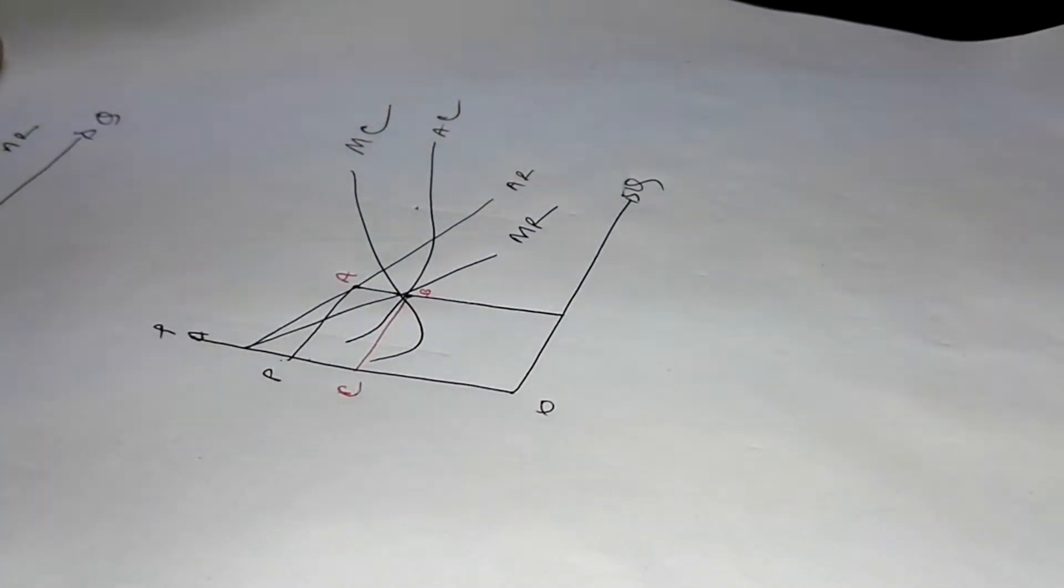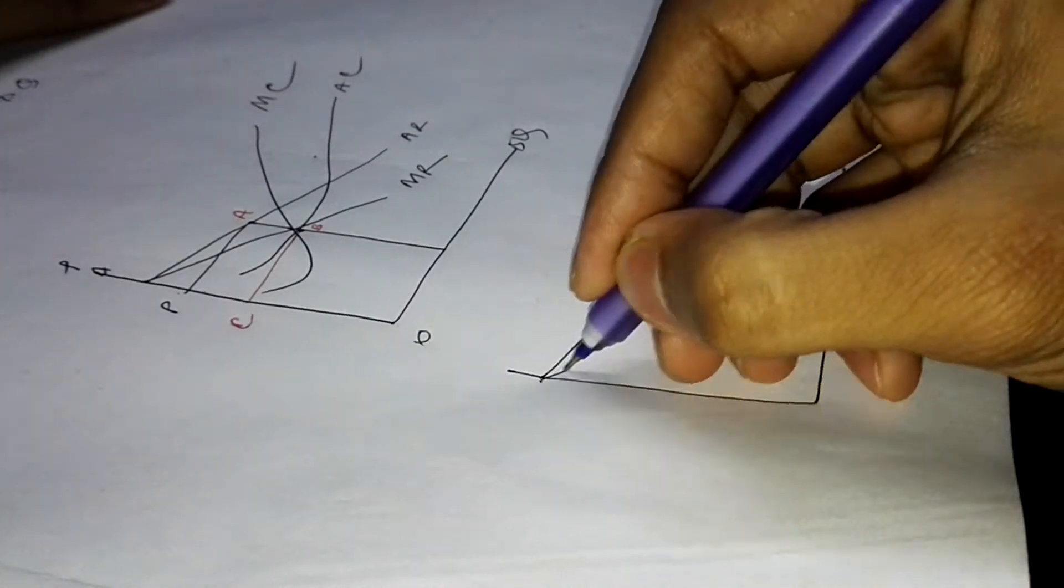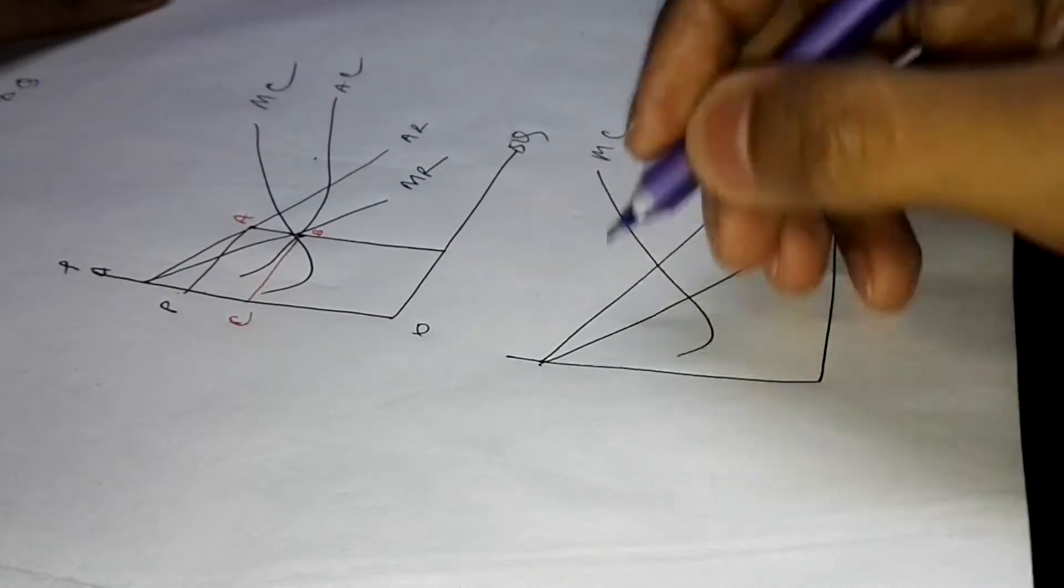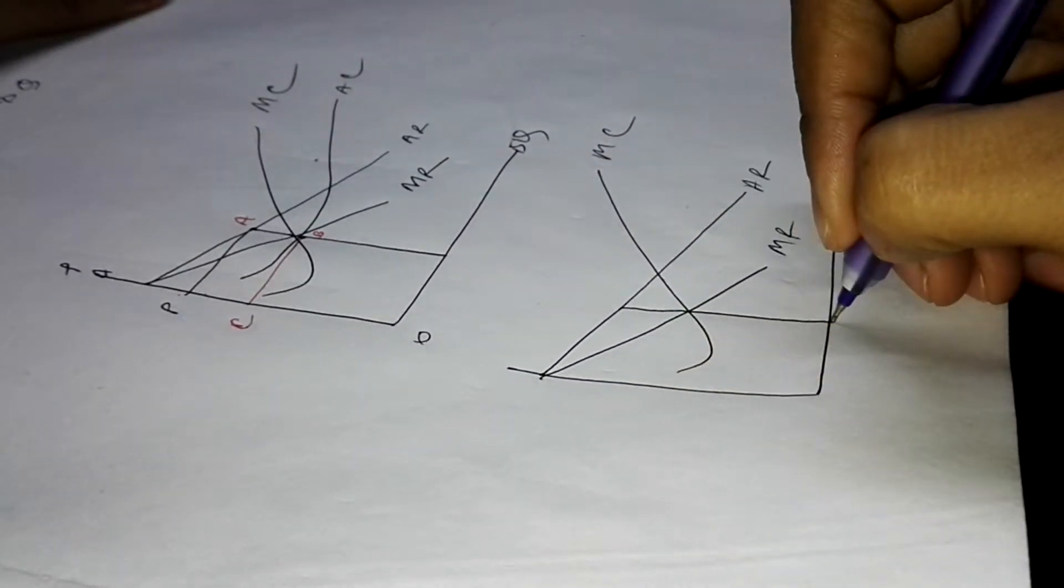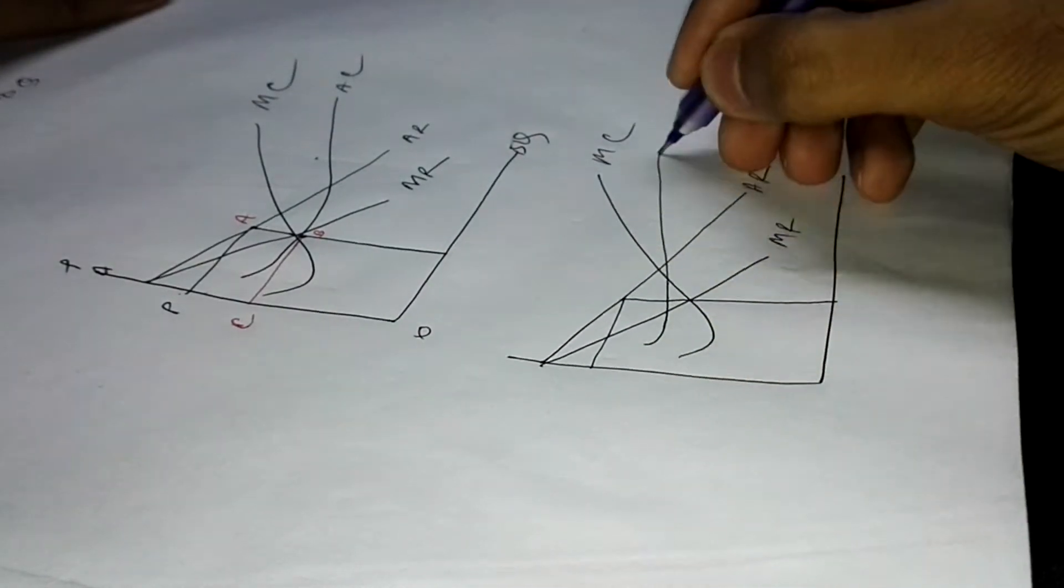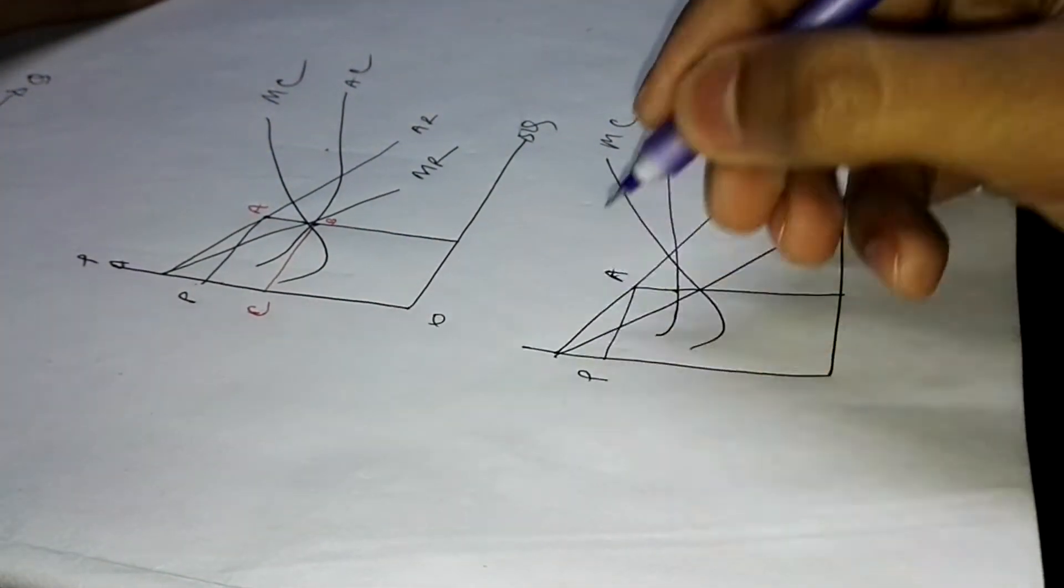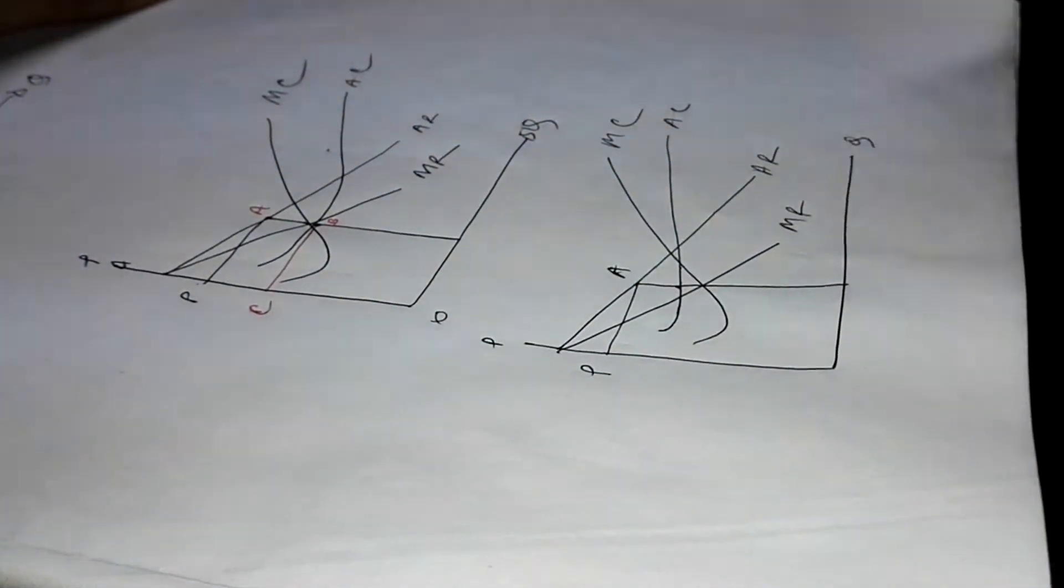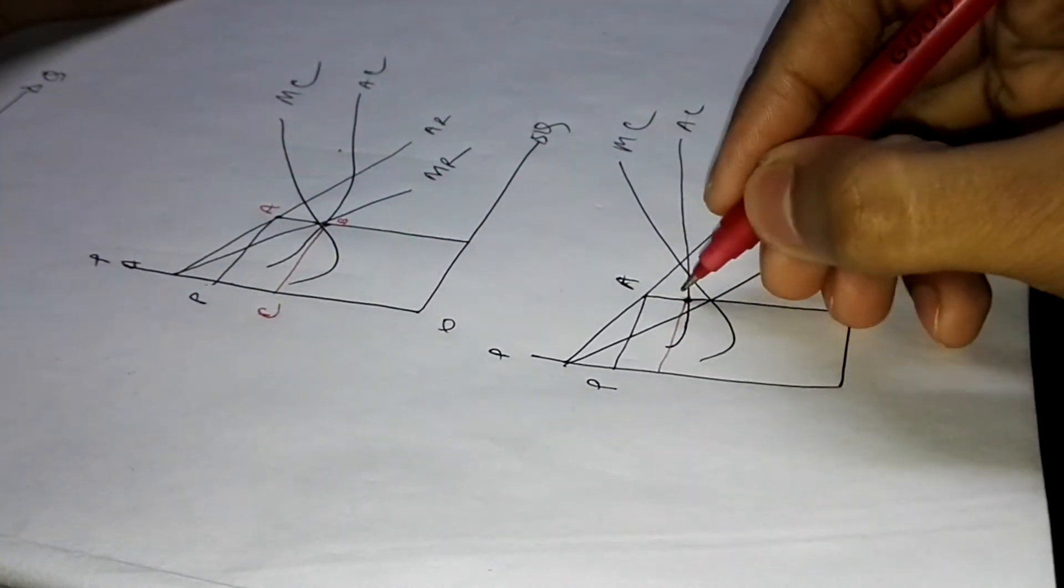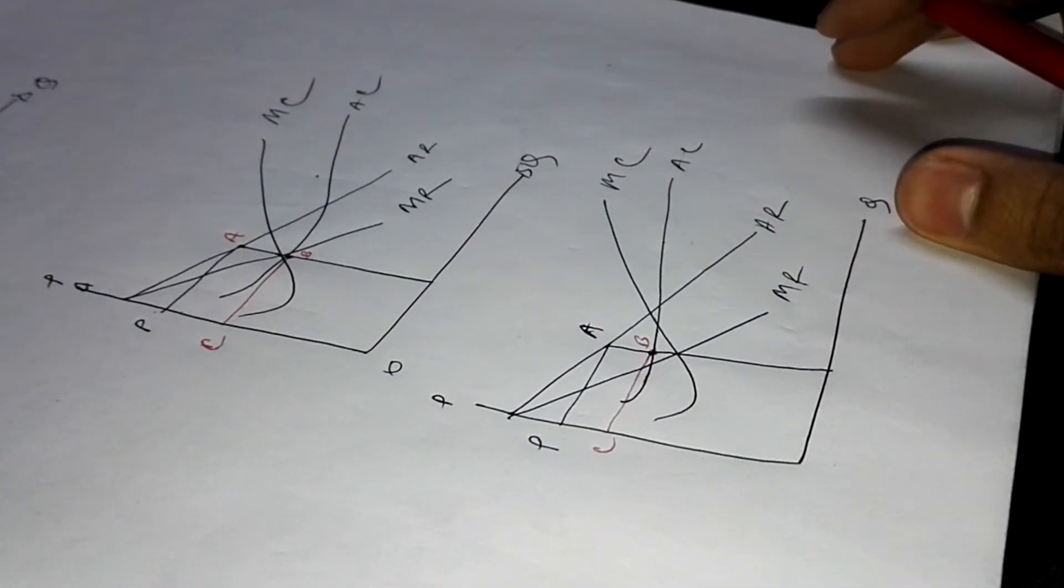Let's draw it again, let's clear it. So this is AR, this is MR, this is MC, this is the line. Let's assume this is the AC. It could be like this, so this is the point A, B, Q. Let's assume this is B and C. I think the picture is much clearer than the first one.